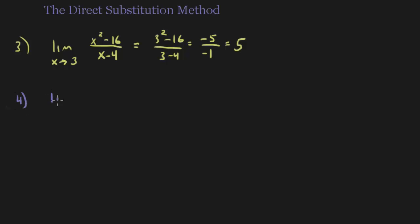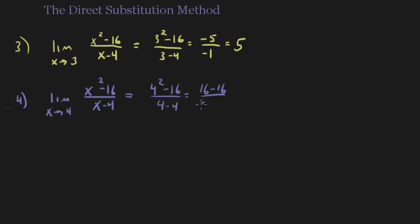Now, say I was to take that exact same function — x squared minus 16 over x minus 4 — but instead of approaching 3, I actually approach 4. Let's see what would happen if I plugged this in. We'd get 4 squared minus 16 over 4 minus 4. That's 16 minus 16 over 0, so we get 0 over 0. Does that mean the limit doesn't exist? The answer is that maybe it exists — when we get 0 over 0, that's a problem, but we're going to have other methods that deal with this type of scenario. We can't use x equals 4 here, and that makes sense because our theorem said a had to be in the domain, and 4 isn't in the domain. So this method won't work and we're going to have to try something else.